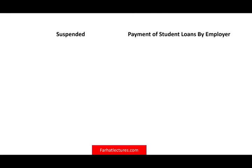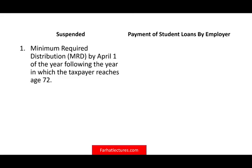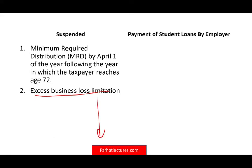Two additional rules are suspended under the CARES Act. First, the minimum required distribution by April 1st from your retirement account — if you've reached age 72, you do not have to take that distribution; it's suspended. Second, the excess business loss limitation is also suspended, meaning you can take more losses. This allows you to take advantage of prior or current losses to help survive the coronavirus downturn.